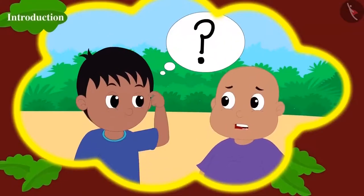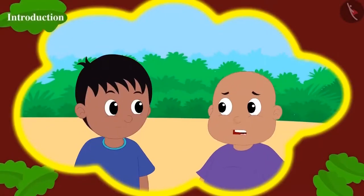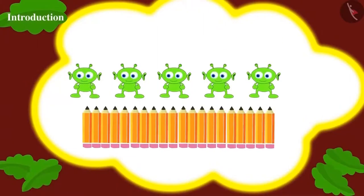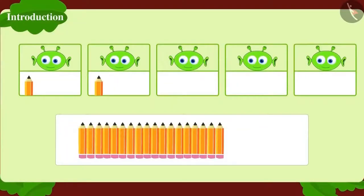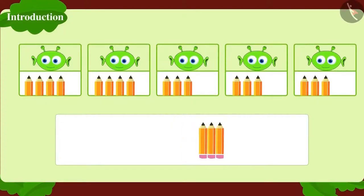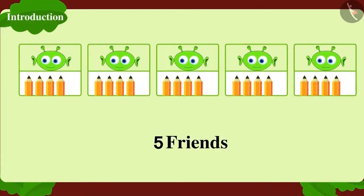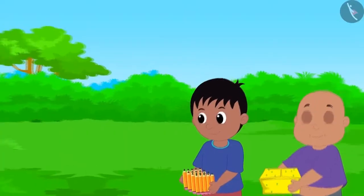Raju and Bablu are planning to buy pencils as gifts for Jeev's friends. They bought 20 pencils from Bunny's shop. Raju asks how they would distribute these pencils among 5 of Jeev's friends. We can divide 20 pencils among 5 friends — each friend will get 4 pencils. We write it as: 20 pencils divided into 5 parts is 4 pencils per part.